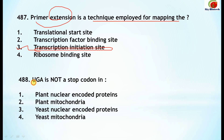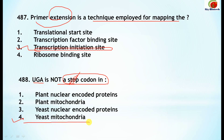Question 488: UGA is not a stop codon in yeast mitochondria.